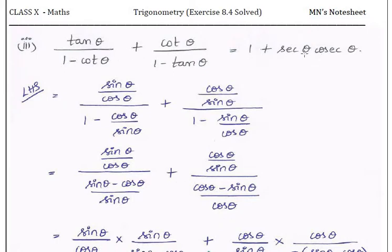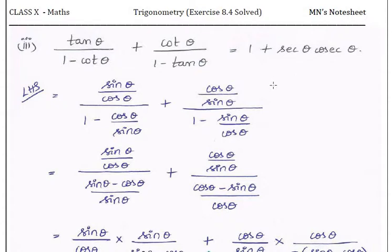To solve this, the LHS needs to be simplified to match the RHS. The RHS contains secant and cosecant: secant is 1/cos and cosecant is 1/sin, so the RHS term becomes 1/(sin·cos). Taking LCM of the RHS gives (sin·cos + 1) divided by sin·cos. So our plan is to convert everything to sin and cos.